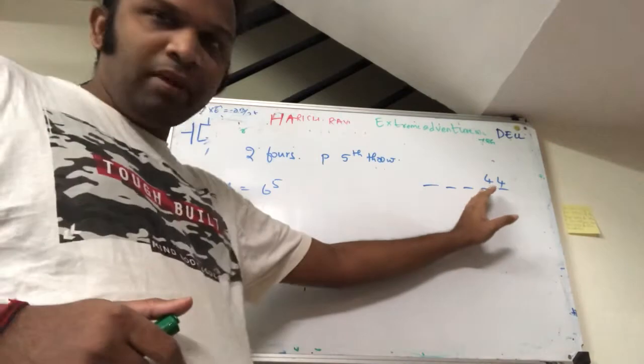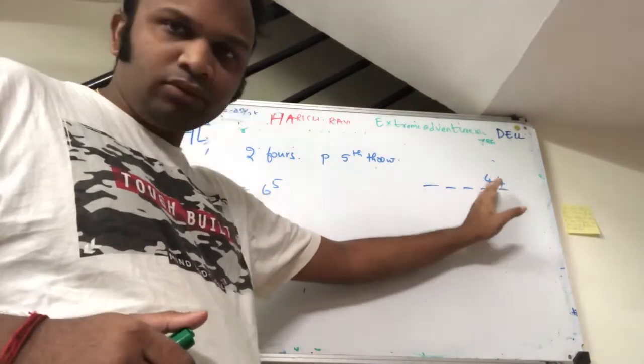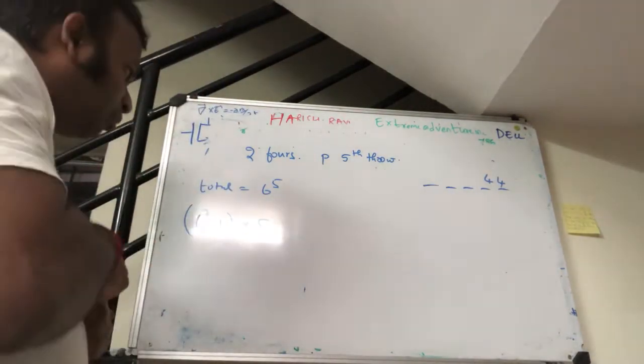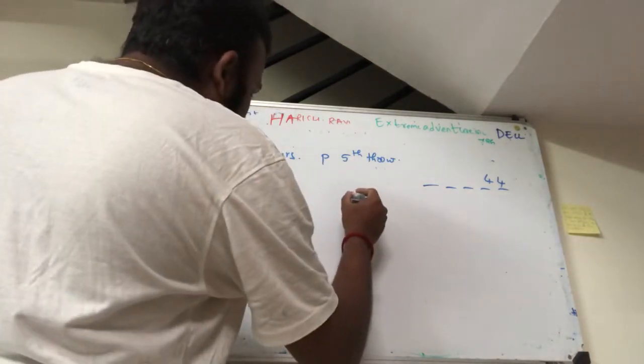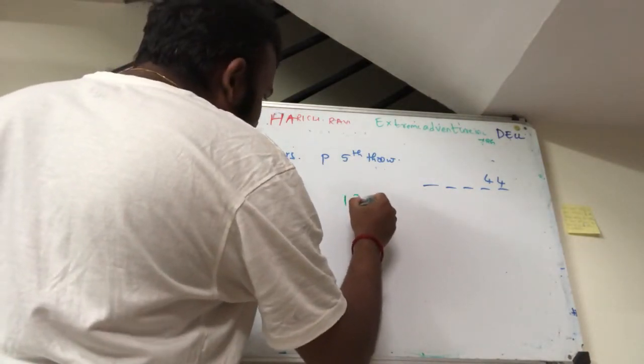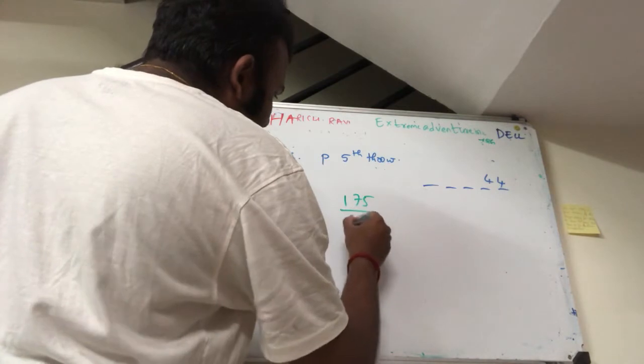The last one cannot be a 4 because then it will be 4 in a row. So it's 5 ways. So the probability is 6 square minus 1 into 5 by 165. That's 175 by 6 power 5.